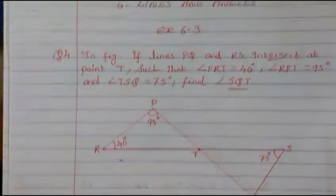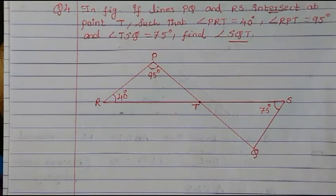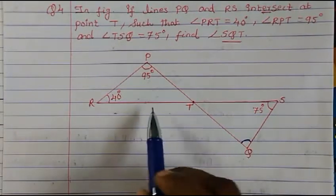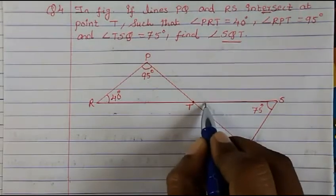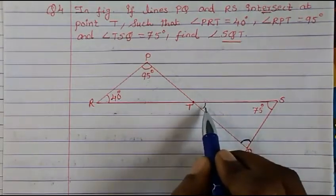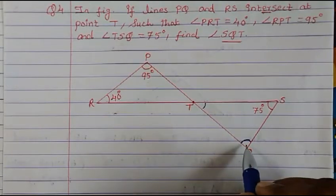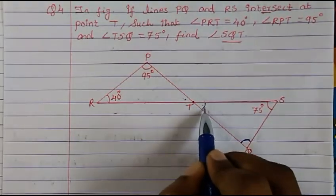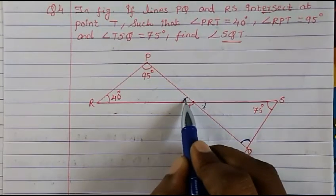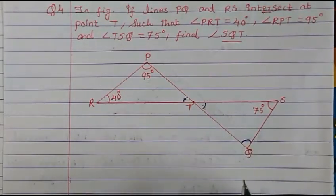We have to find out angle SQT. Now just look at this figure — we have to find out this angle. That means we should know this angle because if we know this angle, we know that the sum of the angles of a triangle is 180. So if we know two angles, we can find the third. In order to find that angle, we need the vertically opposite angle.